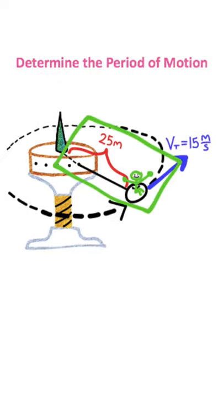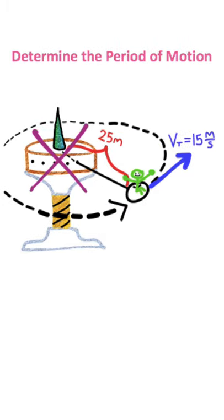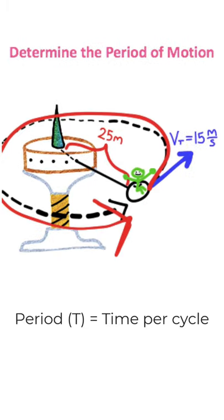Now we're only focusing on one section of the swing here, we don't care about these other sections, and we're trying to figure out the period of motion, which is the amount of time it takes to complete this cycle.